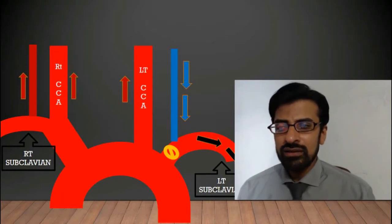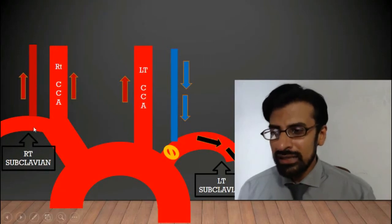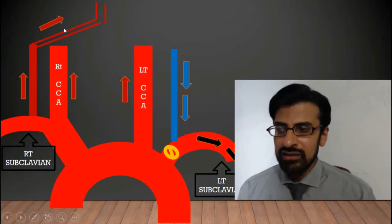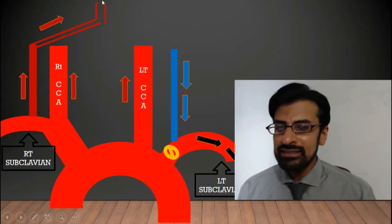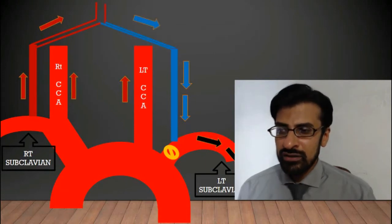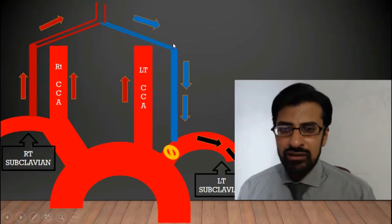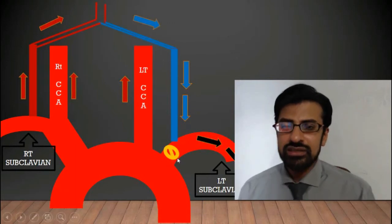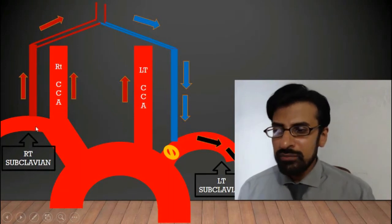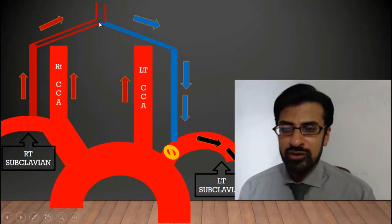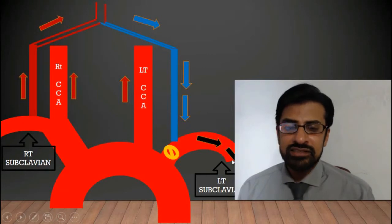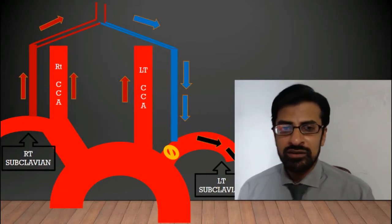Let's look at the route of blood in this phenomenon. Blood that enters the vertebral artery of the normal side reaches the basilar artery. From the basilar artery, part of the blood enters the posterior circulation, while the rest moves down into the vertebral artery of the abnormal side and reaches the subclavian artery. In summary, blood from the normal side vertebral artery moves downward through the vertebral artery of the abnormal side into the subclavian artery — this is called subclavian steal phenomenon.